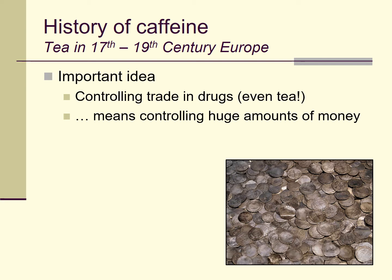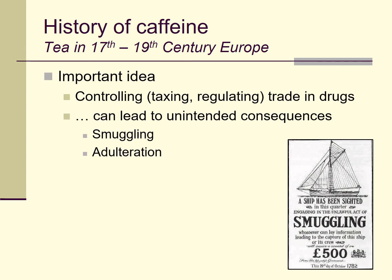Enormous amounts of money flowed out of Europe to purchase this drug — caffeine — in the form of tea from China for a very long period of time. The control of those vast amounts of money made some people incredibly rich and kept other people poor. Another important idea that goes along with this is that attempts to control the trade in drugs — even drugs like tea — can sometimes lead to unintended consequences.